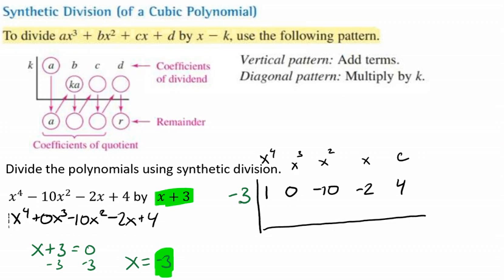And now we're ready to do this problem. So we're going to start by bringing down our 1, because there's nothing to add with it. Then we're going to multiply. Okay, we're going to multiply. So -3 times 1, and we're going to put it right here, is -3. Then we're going to add these. And 0 + (-3) is -3.